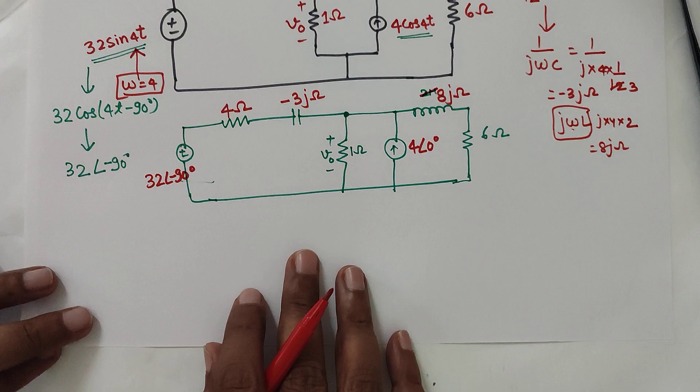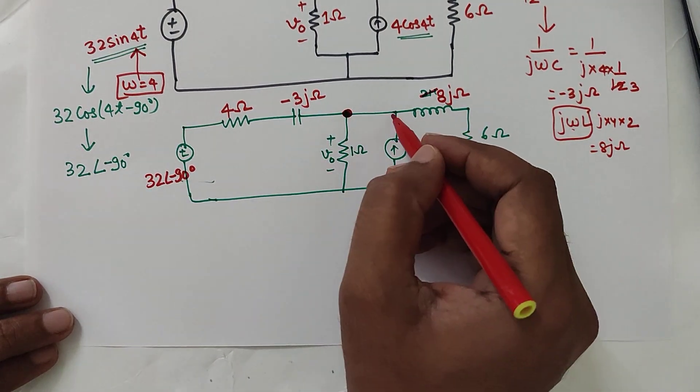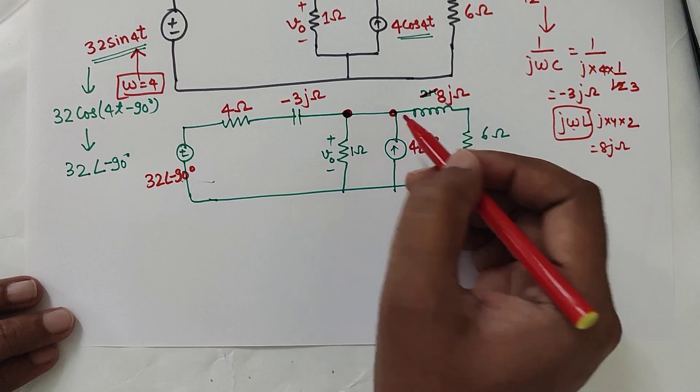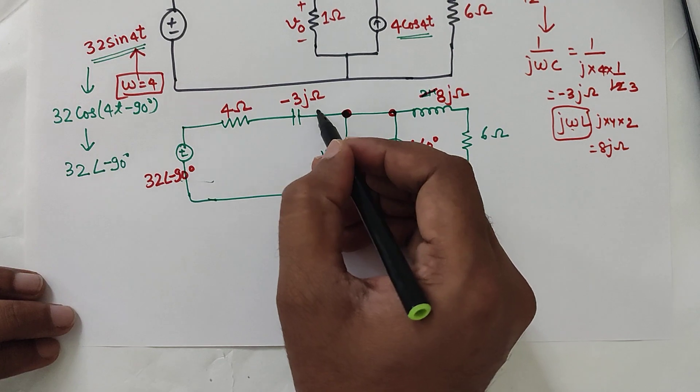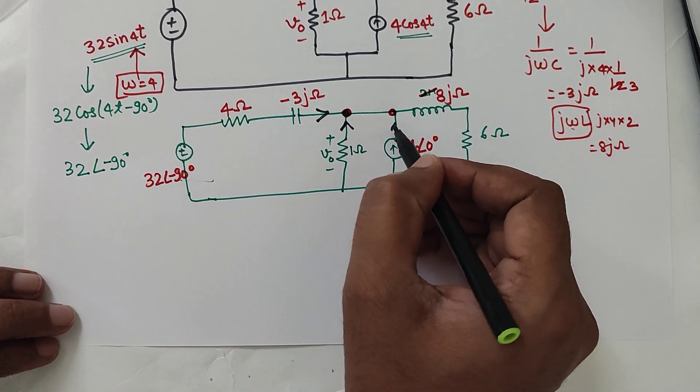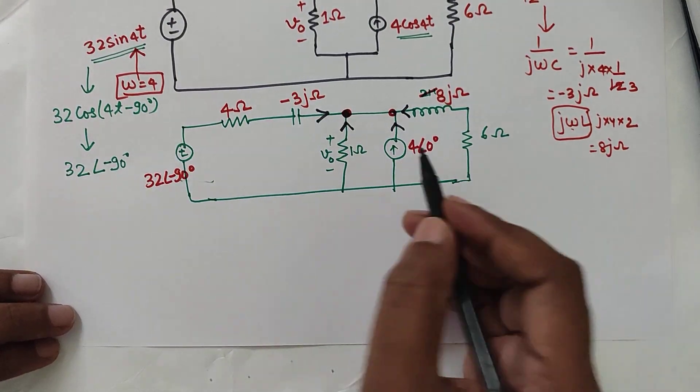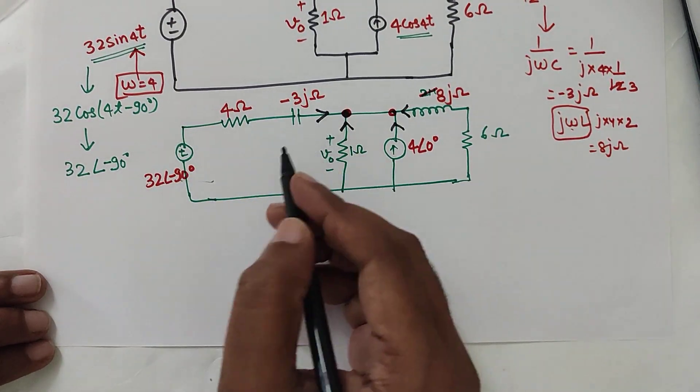Now we will apply the nodal voltage analysis at this node. So this node and this node both are same. When you apply, we have to take all the current which is incoming to this and addition will be 0. So let's take these 4 incoming currents.